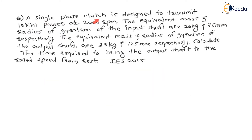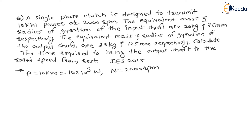The question is: a single plate clutch is designed to transmit 10 kW power at 2000 rpm. So power transmitted P is equal to 10 kW, i.e. 10 × 10³ Watt, and number of revolutions per minute N is equal to 2000 rpm. For the input shaft, the equivalent mass Mᵢ is equal to 20 kg and radius of gyration Kᵢ is equal to 75 mm respectively.